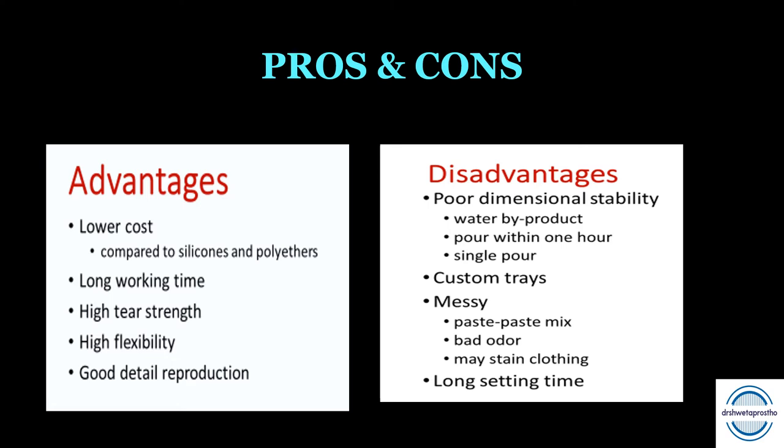Disadvantages of polysulfide: very poor dimensional stability — water is released as a byproduct, curing shrinkage is high at 0.45%, and highest permanent deformation at around 3.5%. It should be poured within one hour and only a single pour can be obtained. Custom trays are required. The material is messy, has a bad odor, and may stain clothing. Setting time is long at 8–12 minutes, which creates difficulty for the patient.